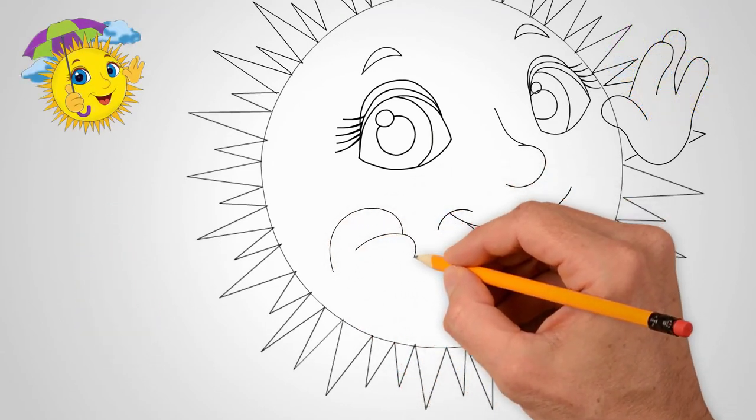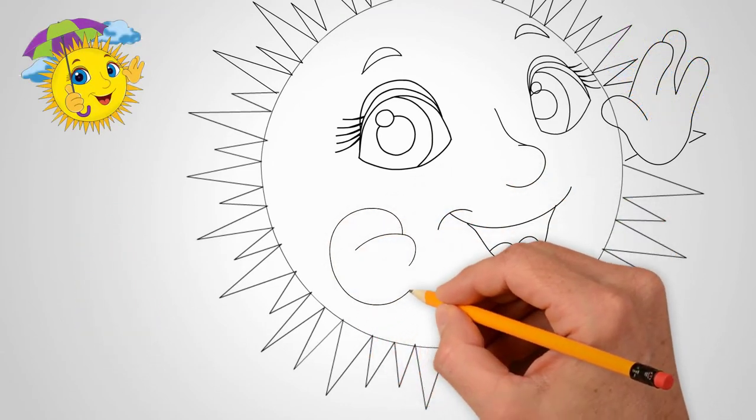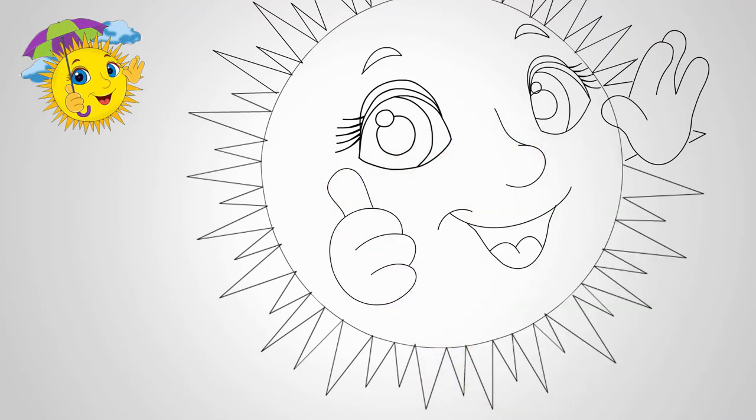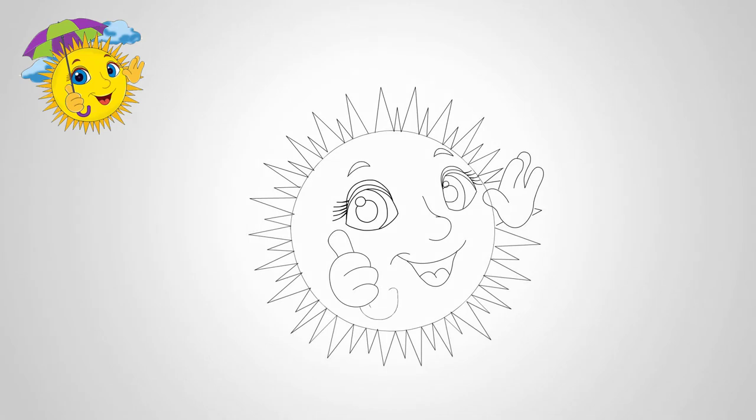Draw the palms on the left and right. Our sun has two hands. Draw one palm and fingers. Now draw the second palm. In this palm the sun holds an umbrella. That's why my fingers are bent here. And one finger raised up. Draw the palm and fingers.